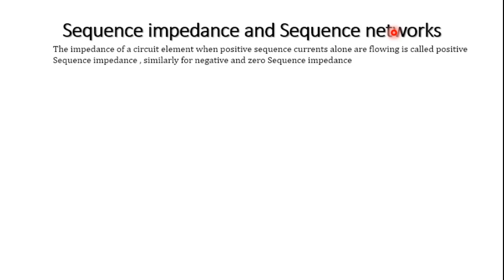Before entering into specific cases, let us define the sequence impedance. The impedance of a circuit element when positive sequence currents alone are flowing is called positive sequence impedance. Similarly, when negative sequence current is flowing, it is called negative sequence impedance. When only zero sequence currents are present, it is called zero sequence impedance.